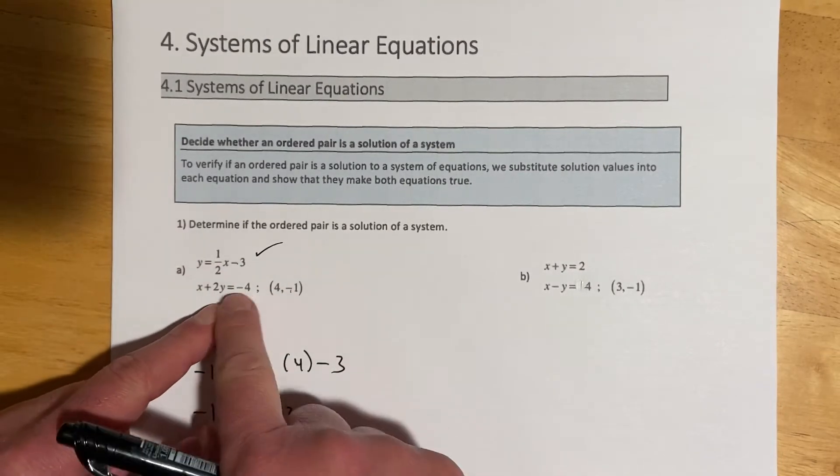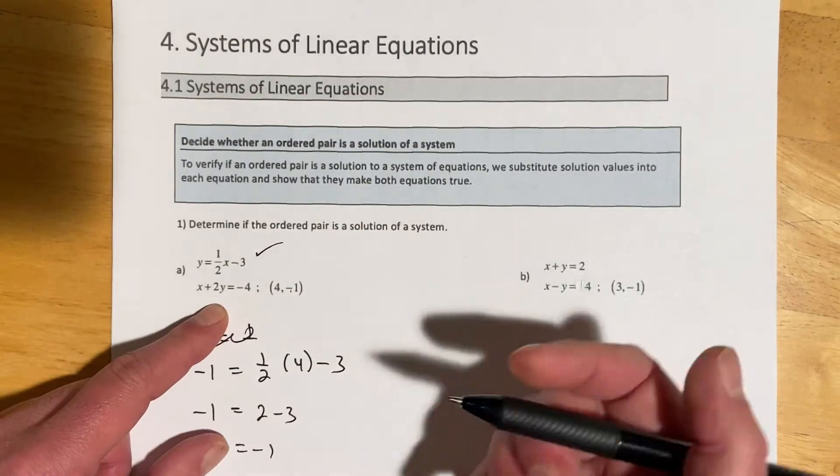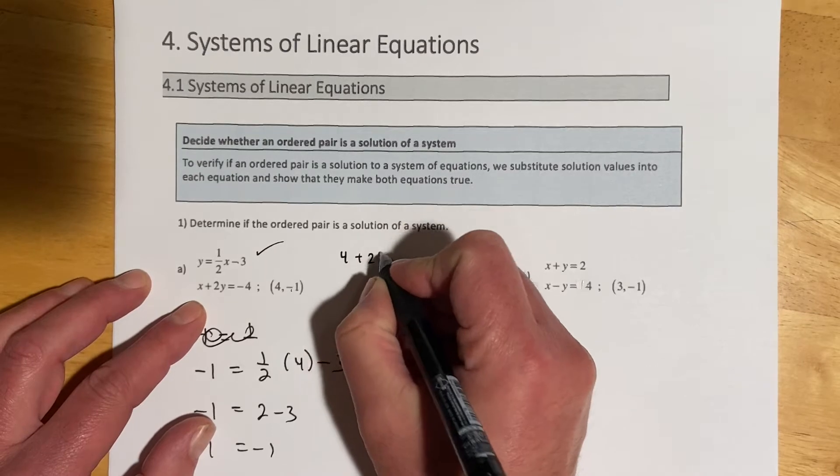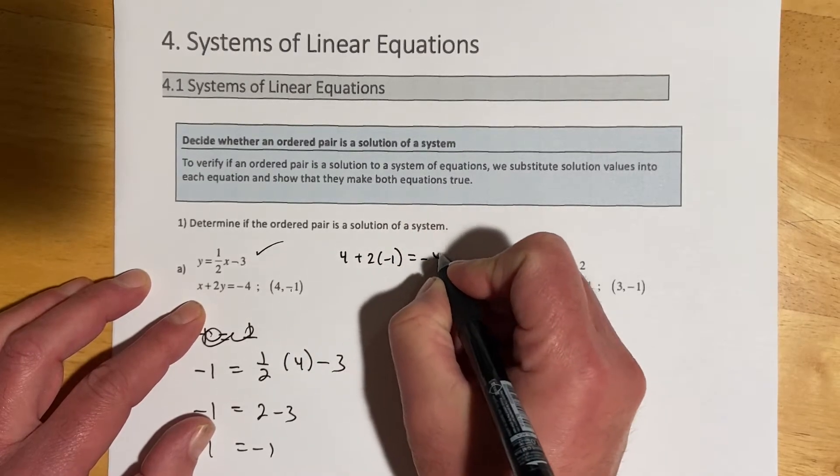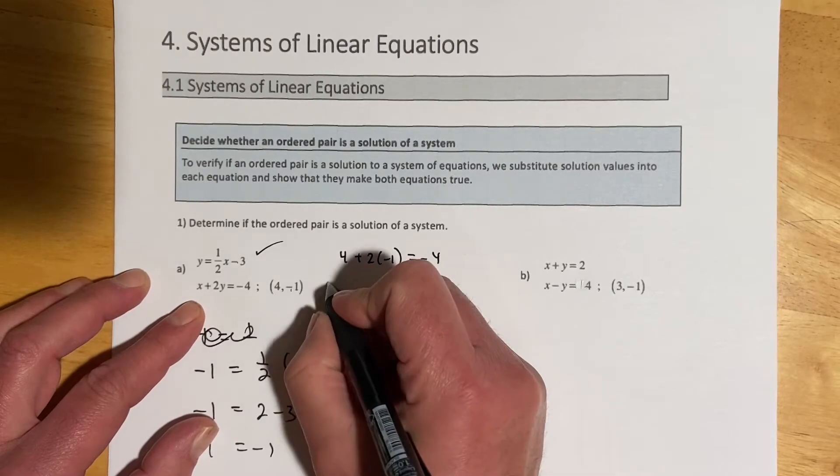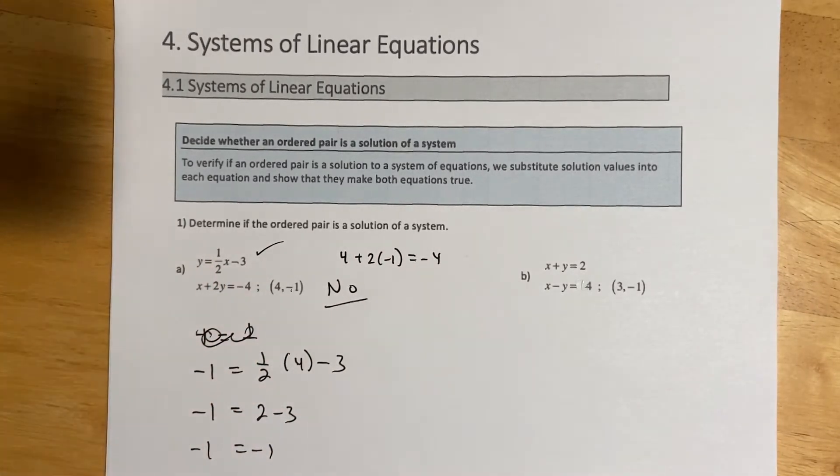So that means this is a solution to this equation. If it is a solution to this equation as well, then that would be a solution to the system. So here, toss this in, 4 plus 2 times negative 1 equals negative 4. And you can see 4 minus 2 does not equal negative 4. So this is going to be no. This point does not satisfy both of those equations.